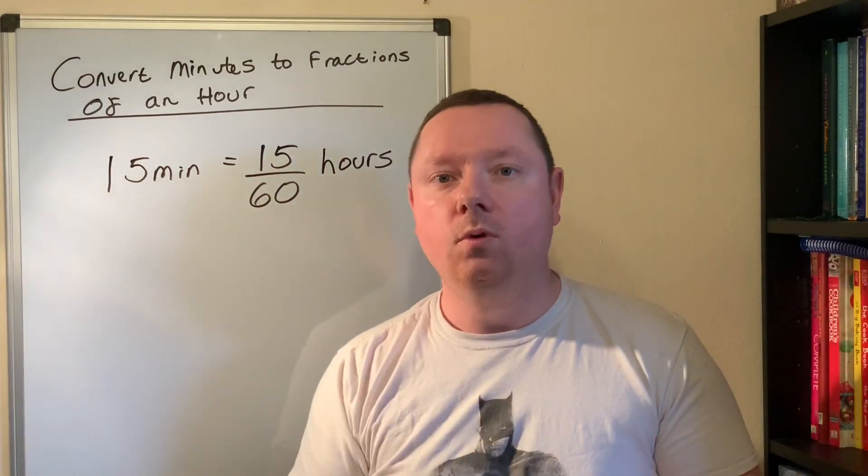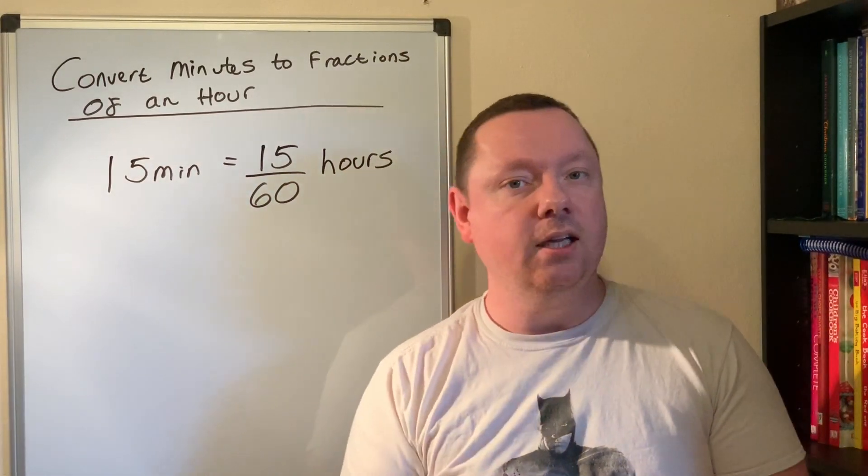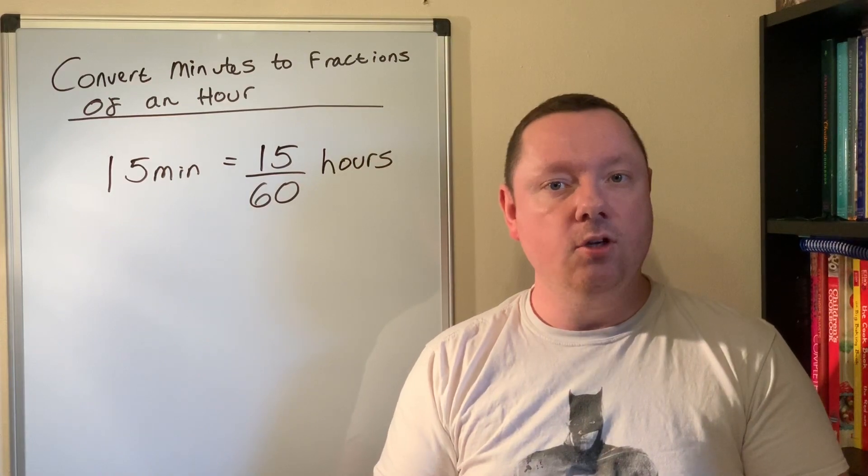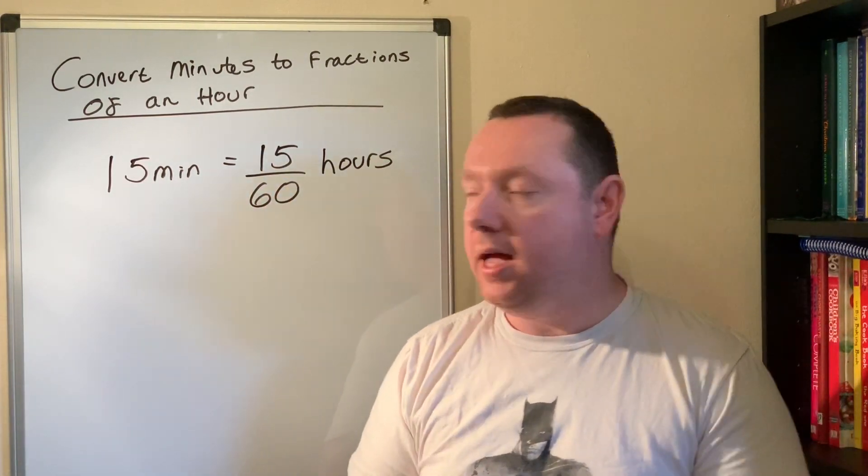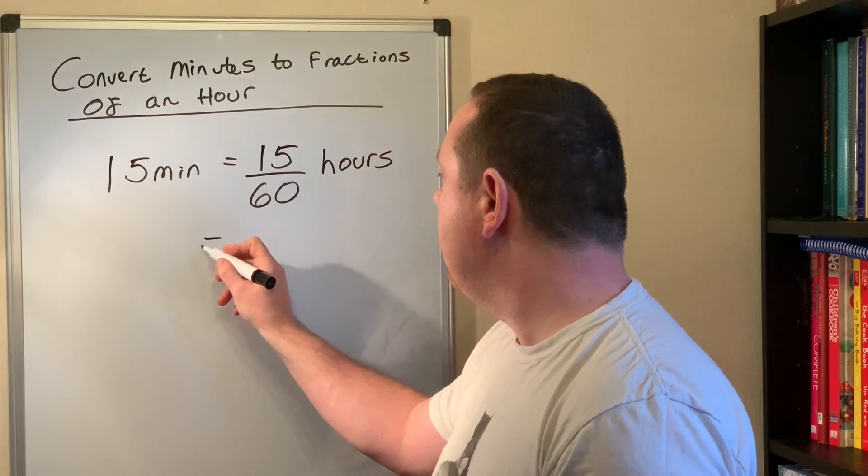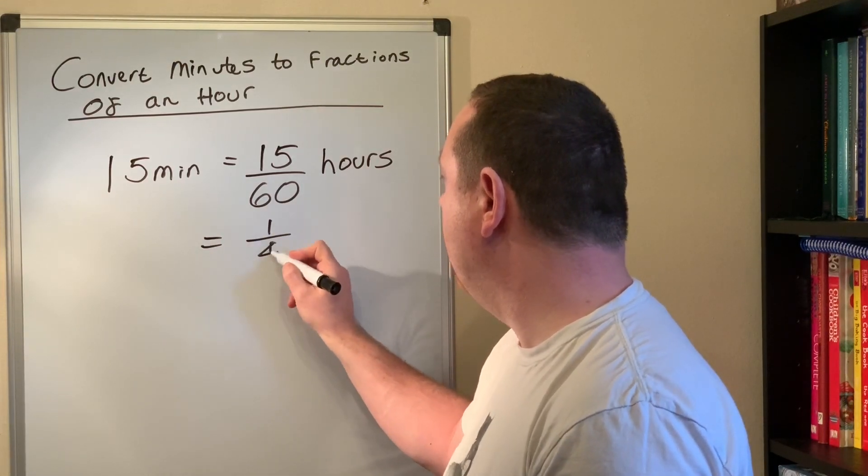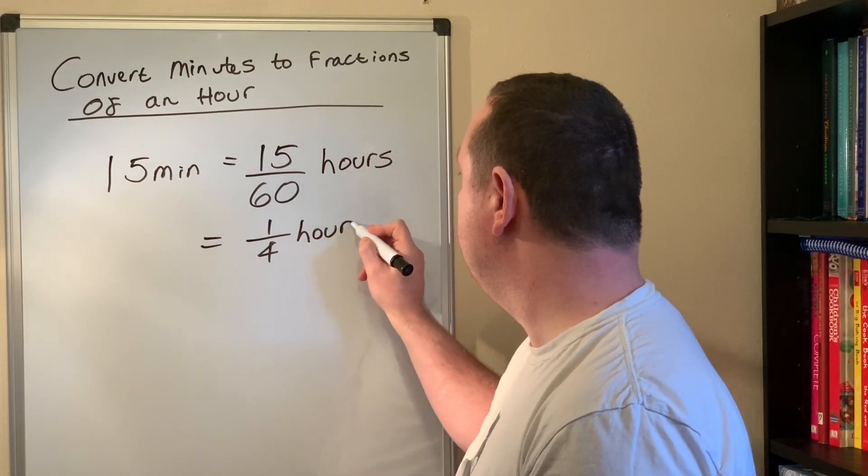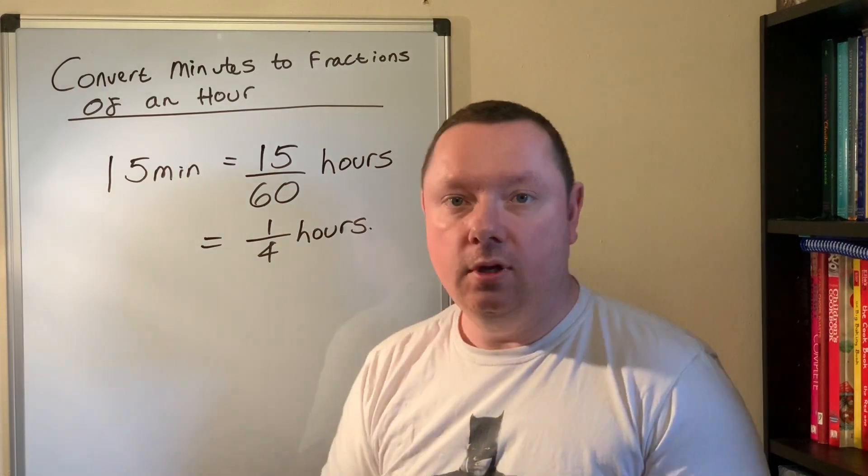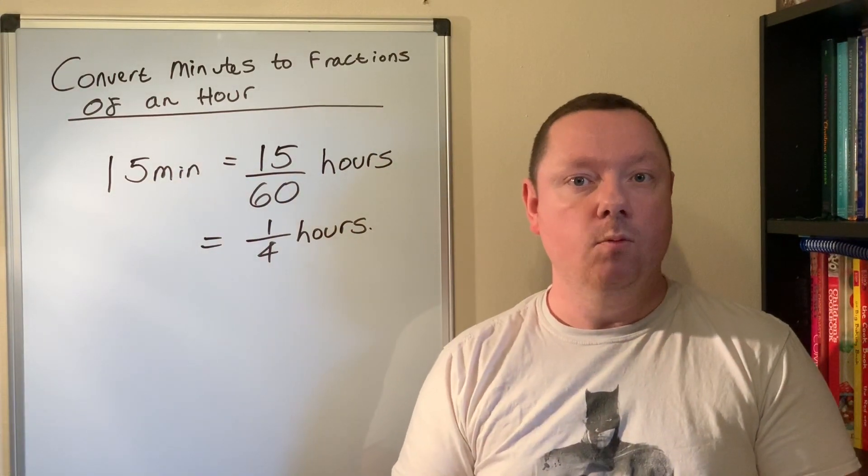Now we don't want to always have to work with a fraction like 15 out of 60, especially if we're not using a calculator, so we always try and simplify our fraction as best we can. 15 out of 60 is a quarter, so that's a quarter hours, or if we were doing that as a decimal we should all know that a quarter is 0.25.